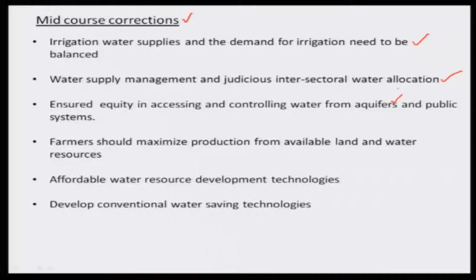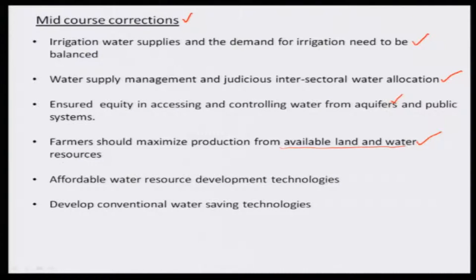Otherwise the groundwater will be completely depleted. We have been going about short-period crops and high-yielding variety crops. Now we have to think about available land and water — based on that only we should be able to grow our food. That means maximize the yield from the same area. And many times in and around urban areas, local agriculture lands have been converted into settlement areas, which means we are losing our potential agriculture area from our system.